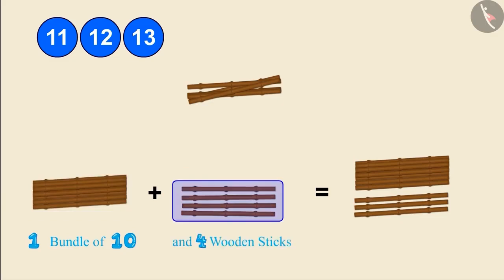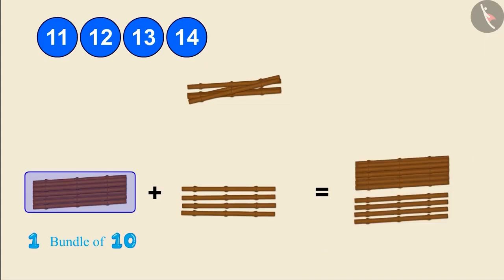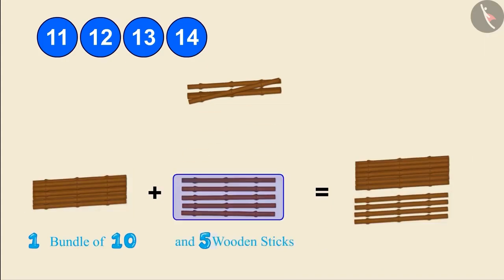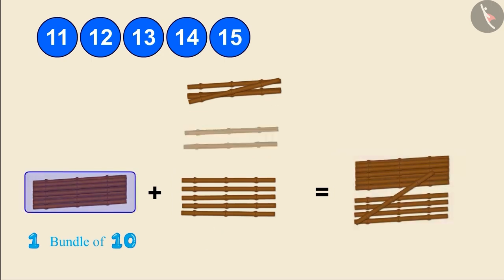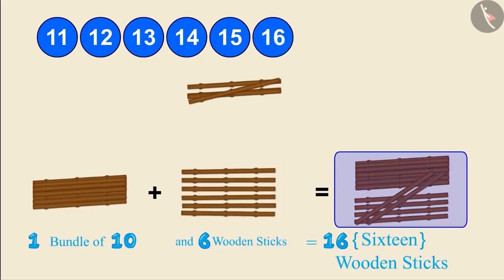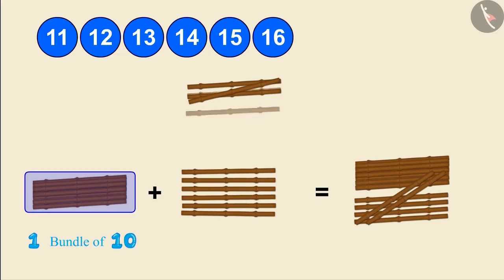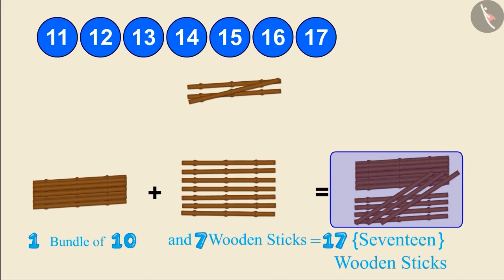One bundle of 10 and 4 wooden sticks make 14 wooden sticks. One bundle of 10 and 5 wooden sticks make 15 wooden sticks. One bundle of 10 and 6 wooden sticks make 16 wooden sticks. One bundle of 10 and 7 wooden sticks make 17 wooden sticks.